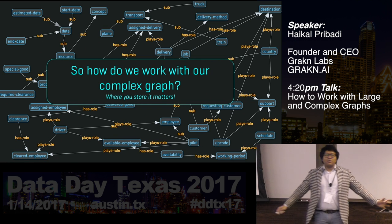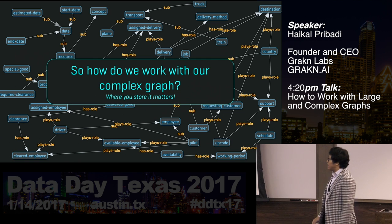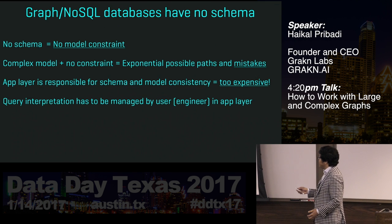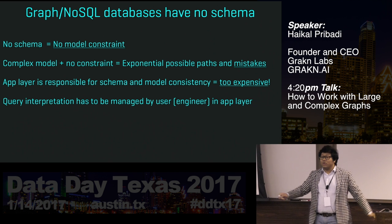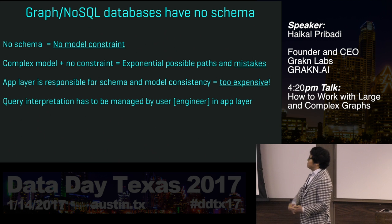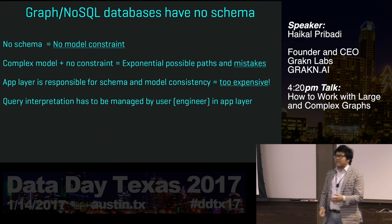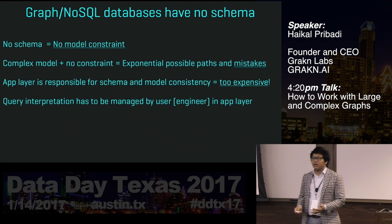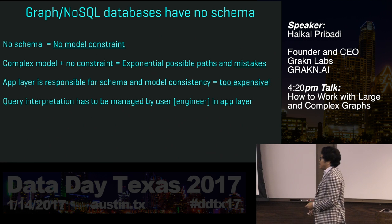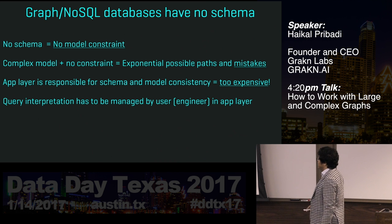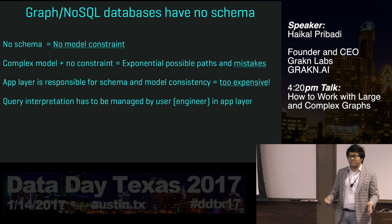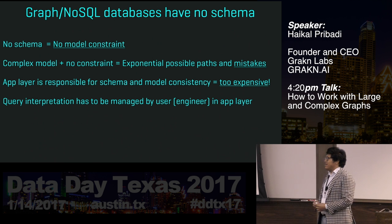So now we know we have a complex graph — how do we work with it? Where we store it kind of matters. We thought: let's store everything in a graph because it's highly interconnected data with so many links between information. But graph databases don't have a schema. We all know there's no such thing as data without a schema — it's either explicit in the database or implicit in the application layer, or sometimes you don't even try to maintain it. In our case, not having a model is really costly: no model constraint on a complex dataset means an exponential number of possible paths and an exponential number of possible mistakes.